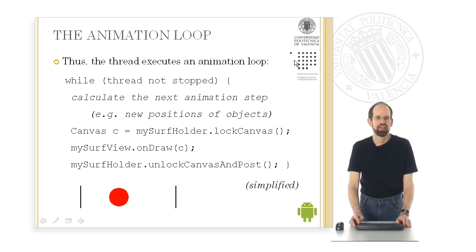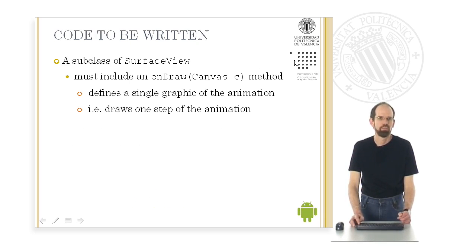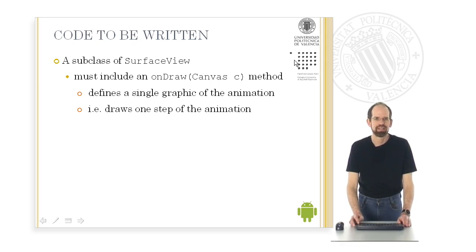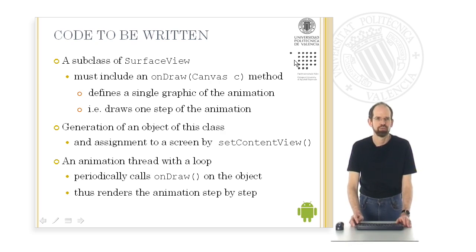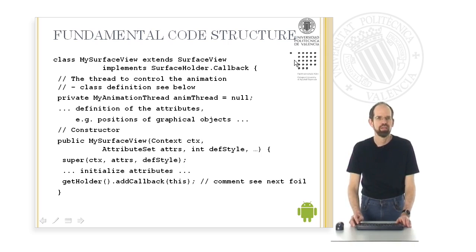This is of course a simplified program; the complete program will look a little more complicated. The programmer therefore has to write three pieces of code. First, a subclass of SurfaceView, including an onDraw method with a canvas parameter which defines a single graphic of the animation — that is, which draws one step of the animation, for example the ball at one specific position. Second, generate an object of this SurfaceView class and assign it to a screen by calling setContentView. Third, an animation thread with a loop which periodically calls onDraw on the object and therefore renders the animation step by step.